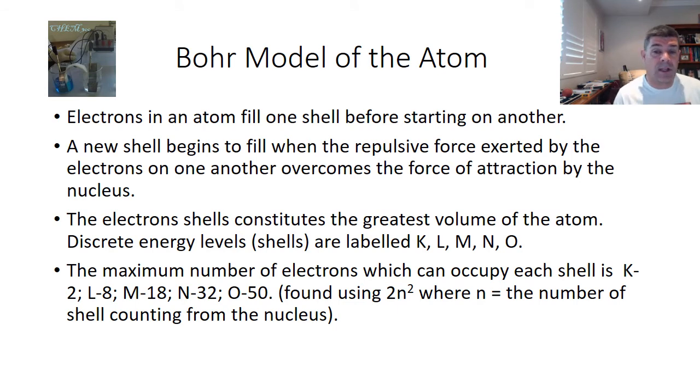The Bohr model is the one we've been most commonly using up to this point, where electrons are surrounding the nucleus of the atom in stable energy levels. Each of the shells is filled before the next one starts to fill. The shells begin when the repulsive force exerted by the electrons on one another overcomes the attractive force from the positively charged nucleus. Electron shells constitute the greatest volume of the atom, while protons and neutrons are concentrated in the nucleus. Discrete energy levels can be labeled with capital letters K, L, M, N, O for shells 1, 2, 3, 4 and so on.